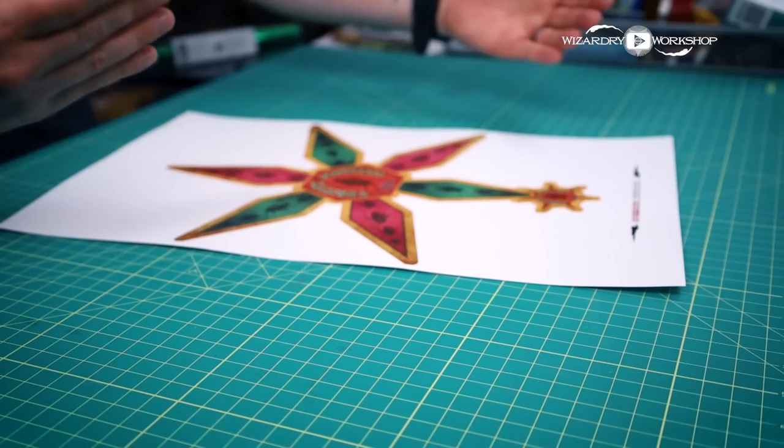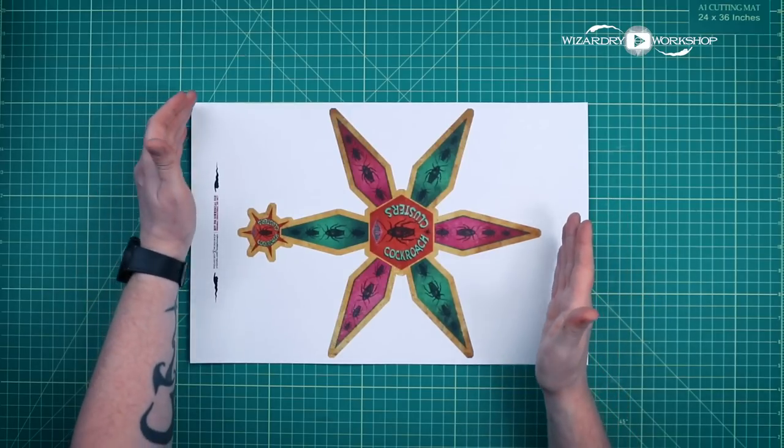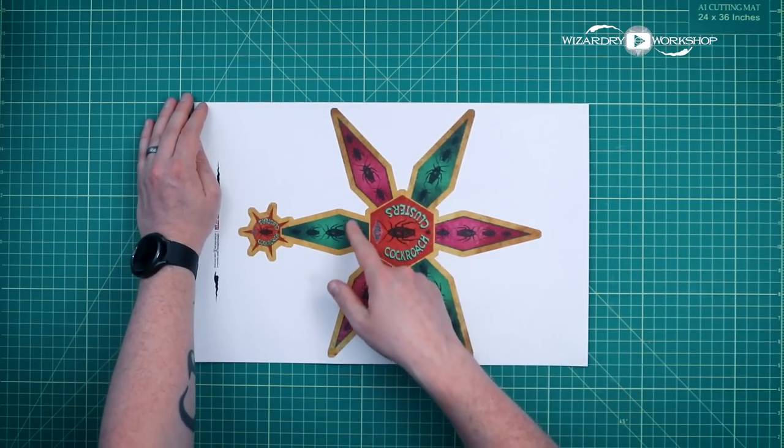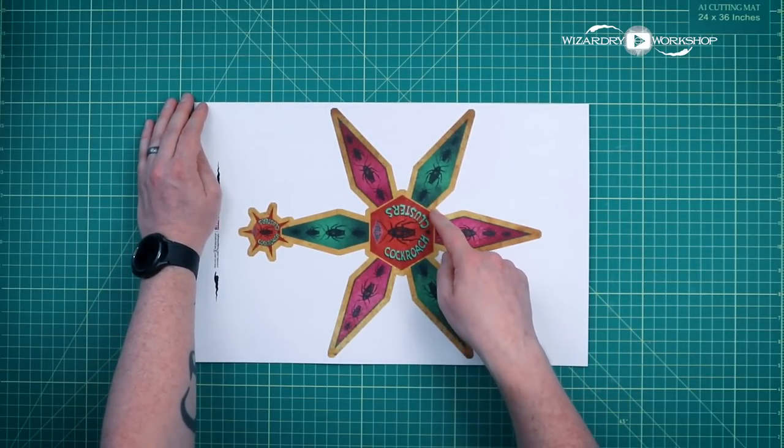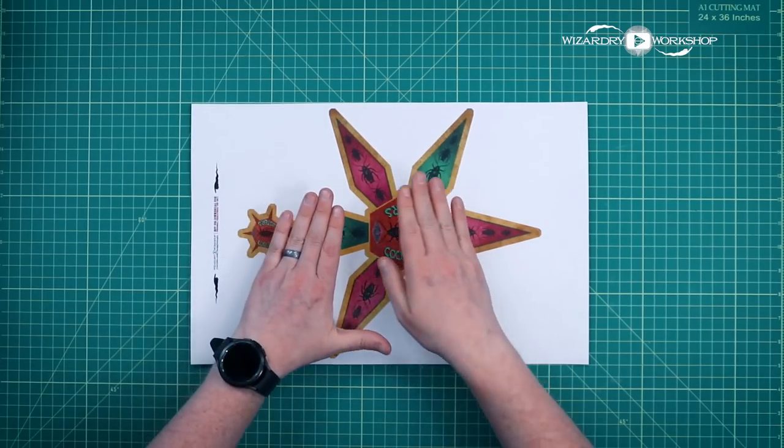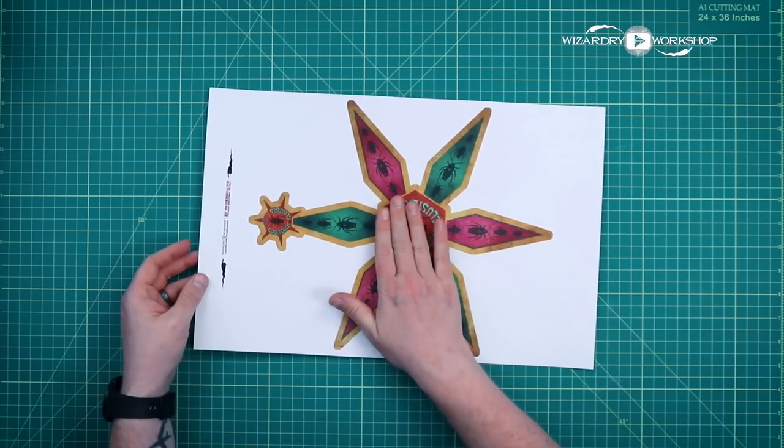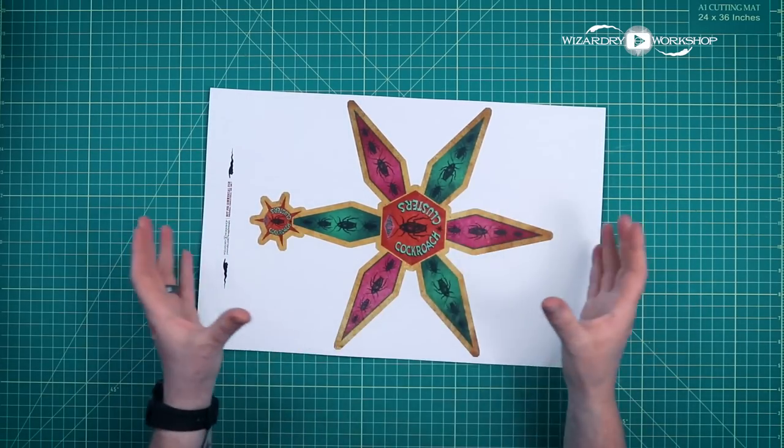And this is printed on 11x17 cardstock right here. There's also an 8.5x11 inch version, which just includes parts of this, and you would cut it out and then attach them together in the middle, and that's how you would put this together.